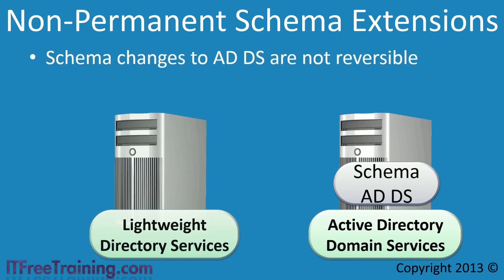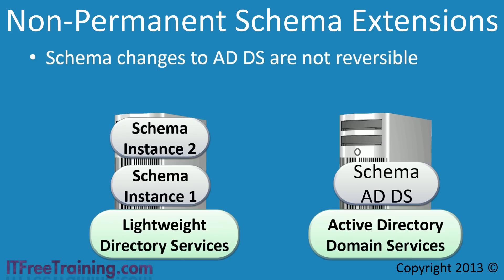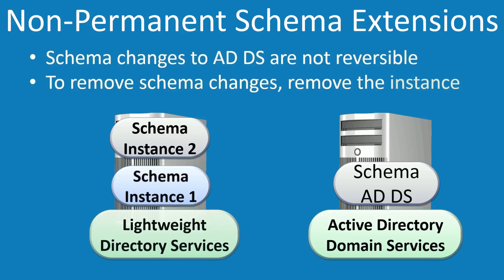To get around this problem, Active Directory Lightweight Directory Services can be used. When an instance is created, it has its own independent schema. If you want to deploy another application later that requires schema changes and you want to keep it separate, you simply create another instance. If you later decide to remove the application, you simply remove that instance along with its schema changes. This means you can add support for applications requiring schema changes without those changes affecting your network indefinitely.